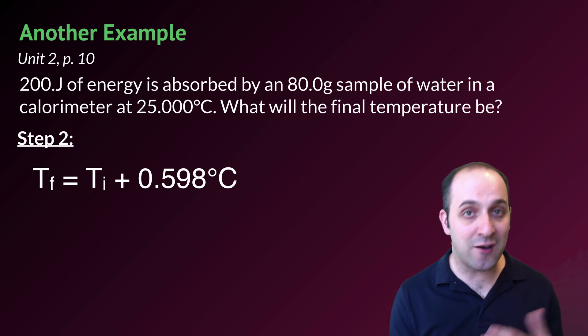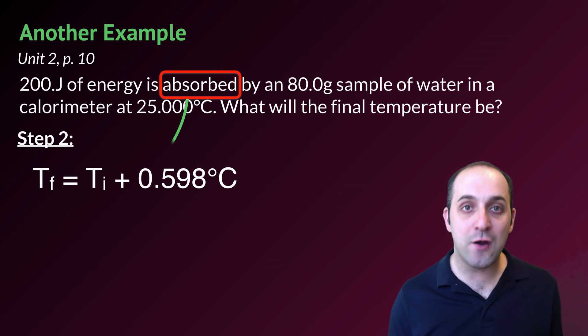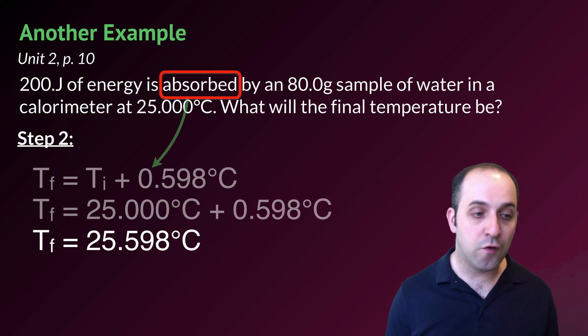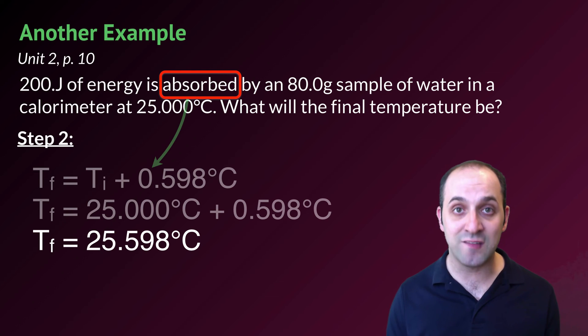An obvious question here would be, why do we add and not subtract? It's actually in the problem. We know that the water is absorbing the energy from this process. As a result, we know that its temperature is going to increase above whatever its initial temperature was. Using that, we can plug in our values and solve for a final temperature of 25.598 degrees Celsius.